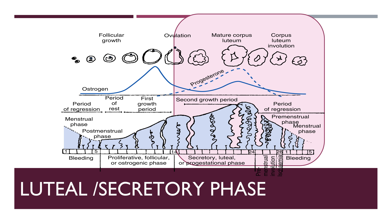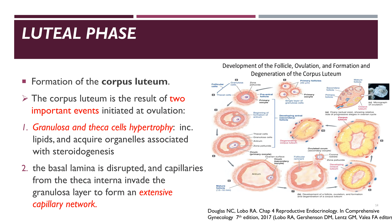Let us now discuss the second half of the menstrual cycle, which is the luteal or secretory phase. After the oocyte is extruded from the mature dominant follicle, the amount of follicular fluid is markedly reduced, the follicular wall becomes convoluted, and the follicular diameter and volume greatly decrease — forming what we call the corpus luteum. The corpus luteum results from two important events: granulosa and theca cells hypertrophy with increased lipid content and acquire organelles associated with steroidogenesis — which is why the corpus luteum appears yellow — and the basal lamina is disrupted as capillaries from the theca interna invade the granulosa layer to form an extensive capillary network.